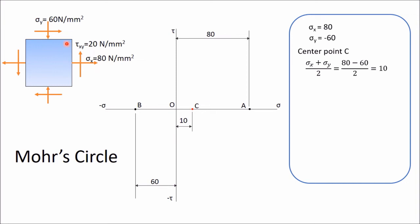From point A, draw a vertical line of length 20 N/mm² downward (negative direction) and mark point D. Point D represents the state of stress in the X plane, with coordinates (80, −20). Similarly, from point B (the Y plane), the shear stress of 20 N/mm² is clockwise, which is positive. Draw a vertical line of 20 upward and mark point E. Point E represents the state of stress in the Y plane, with coordinates (−60, +20).